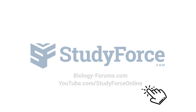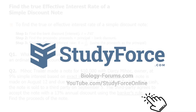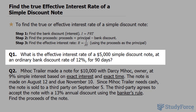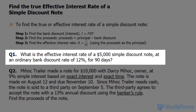In this lesson, I'll show you how to find the true effective interest rate of a simple discount note. The steps of doing this are shown on your screen. Beginning with question number one, what is the effective interest rate of a $5,000 simple discount note at an ordinary bank discount rate of 12% for 90 days?